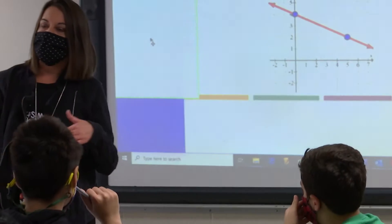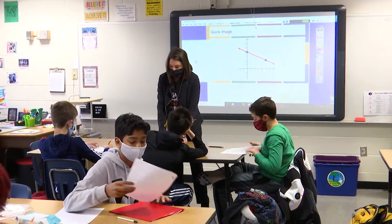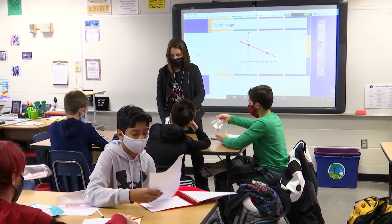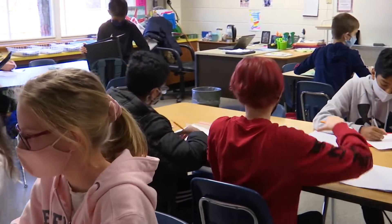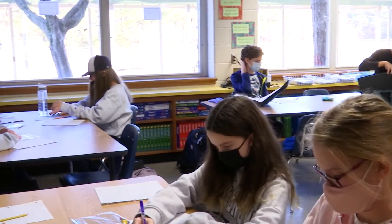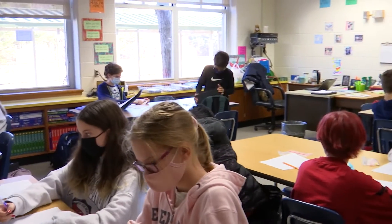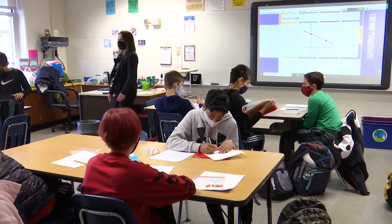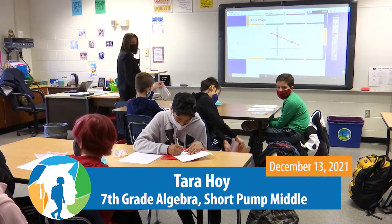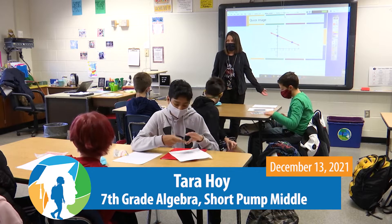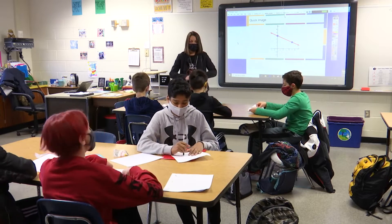Before we get into learning some new content, we're going to do this activity with the Skittles at your table and the graphs. So what I need you to do is grab one bag of Skittles and then the graphing worksheet. You can clear your desks other than that worksheet. What do you think the Skittles are going to be on our graph? They're going to be the points. So you can go ahead and open them up. Put them on your clean piece of paper.